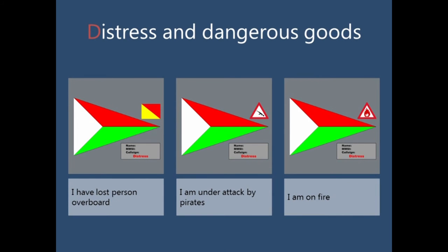Distress and danger pictograms. In the first picture you can see a pictogram of a man overboard situation. Since there is no existing symbol for a man overboard situation, we have created our own symbol. In the top right corner you can see a square with a red color and a yellow color splitting in the middle. In the bottom right corner you can also see the standard AIS information. In the second pictogram, the one in the middle, you can see a vessel that is under attack by pirates. In the top right corner you can see the symbol of a weapon, which symbolizes a piracy attack. And in the last one you can see a vessel that is on fire, which also has a symbol of a flame.